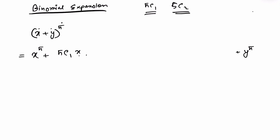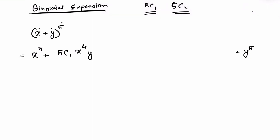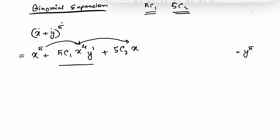For each middle term, you need the terms related to x and y. The power of x decreases by 1 each time — so the first middle term is 5c1 times x to the power 4 times y to the 1. Then 5c2 gives x cubed times y squared, since the power of x decreases from 4 to 3 and y's power matches the c value.